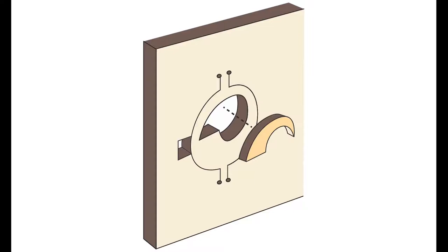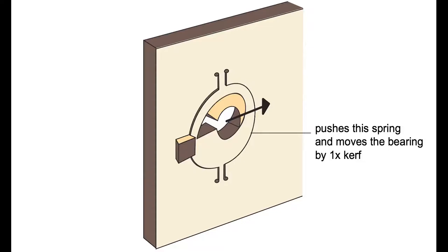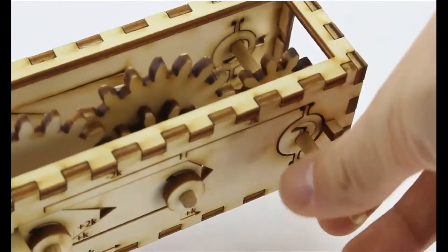We achieve that by taking the standard bearing and adding a spring around it. We place a wedge next to it, which pushes the spring sideways by exactly one times kerf. By repeating the same with the other gear, both gears move exactly by the amount of material that was removed from their teeth, resulting in gears that engage well, like what you see here in this multi-stage gearbox.